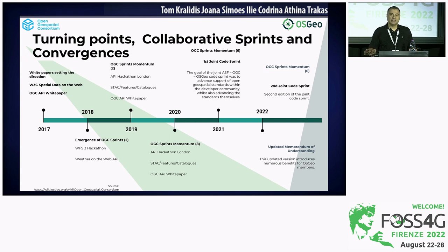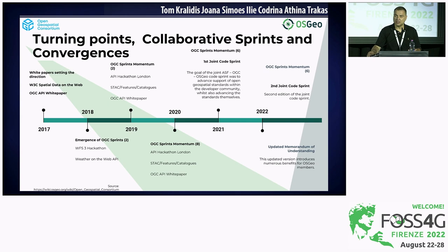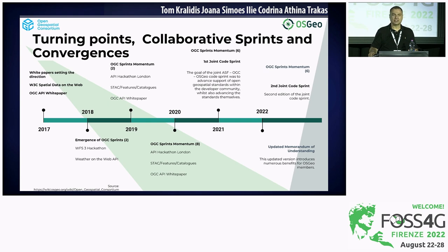At the same time, OGC started to embark on their own sprints. Previously there were only member meetings or technical committee meetings, but now OGC was getting into sprints, showing the realization of the value of developers and their implementations. This started with the WFS3 hackathon in Boulder, Colorado, and the Weather on the Web API code sprint in DC. The momentum continued — from one sprint, a few months later there was another, and another, not just one-offs but a wider direction OGC was cutting a path for.